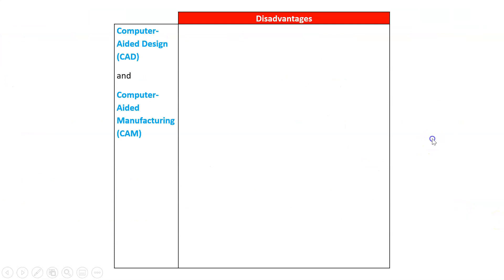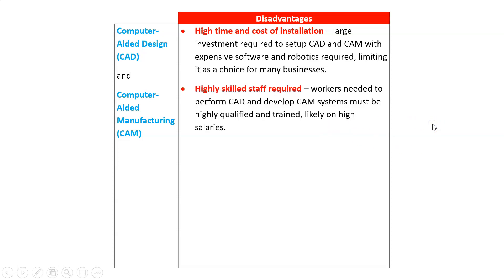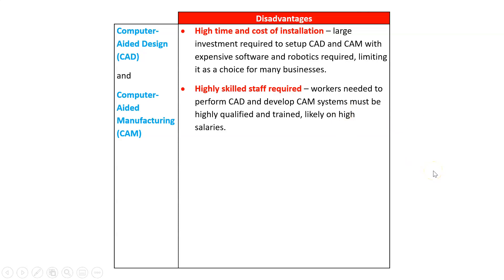What about disadvantages? Like with automation, there is a very high time and cost of installation. If you watch the Tesla or the Lego documentaries, the machinery there is very complicated and very expensive. We also need really highly skilled staff — especially for the coding part to turn these things into program instructions — with degrees and understanding of computer science, and they're going to be on really high salaries. And we're going to have redundancy of employees. Every time we automate or use aided manufacturing from a machine, we replace a human — or maybe instead of needing three people, we only need one who uses the machine. So now we've got an ethical or CSR issue to consider.